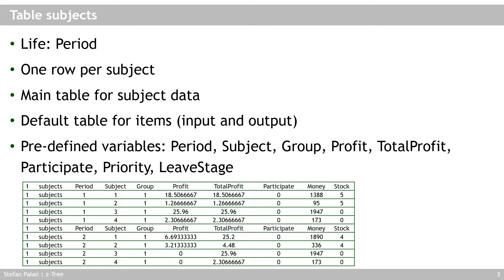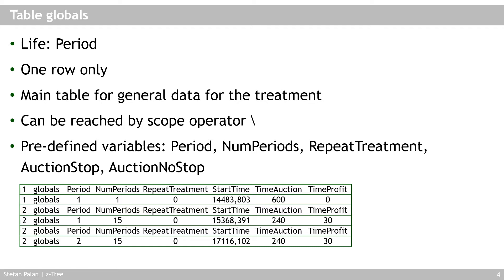The globals table is a predefined table with a lifetime of period, but it always has only one row — not multiple rows like the subjects table. It is the main table for general data about the treatment — general settings that apply to all subjects. Because there's only one row, the single value there applies to all subjects. It can be accessed via the scope operator backslash — we'll come back to that shortly.